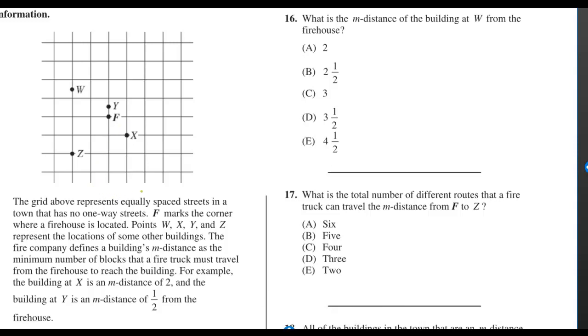The grid above represents equally spaced streets in a town that has no one-way street. F marks the corner where a firehouse is located. Points W, X, Y, and Z represent the locations of some other buildings.